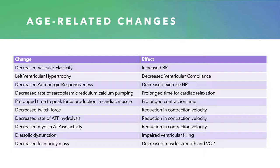All of these things are associated with decreased heart rate and decreased filling. We have decreased twitch force, decreased ATP hydrolysis which slows down contraction, and decreased ATPase activity which also slows down contraction. We start to experience diastolic dysfunction, meaning the heart isn't able to relax as quickly or as completely, which further impairs ventricular filling. We also start to lose body mass — we're not able to deliver glucose and oxygen as well. The body accommodates by decreasing muscle mass, leading to a further decrease in muscle strength and VO2. It's tough getting old.